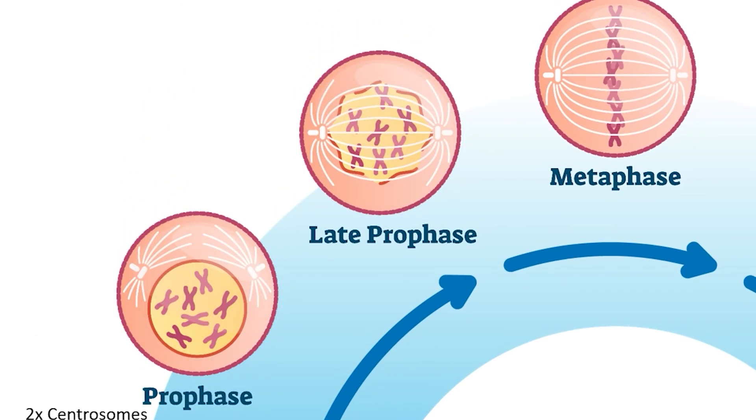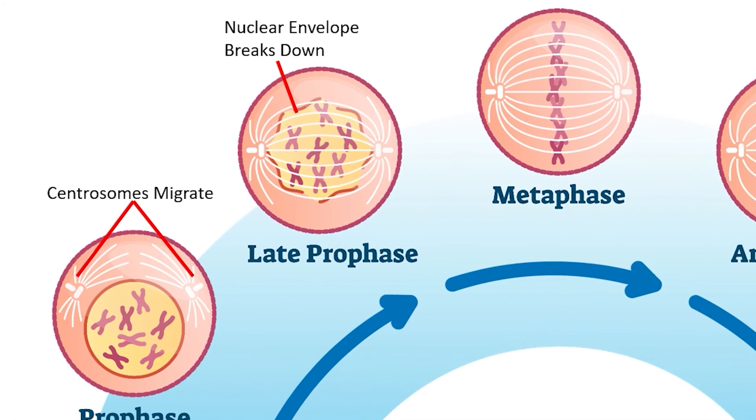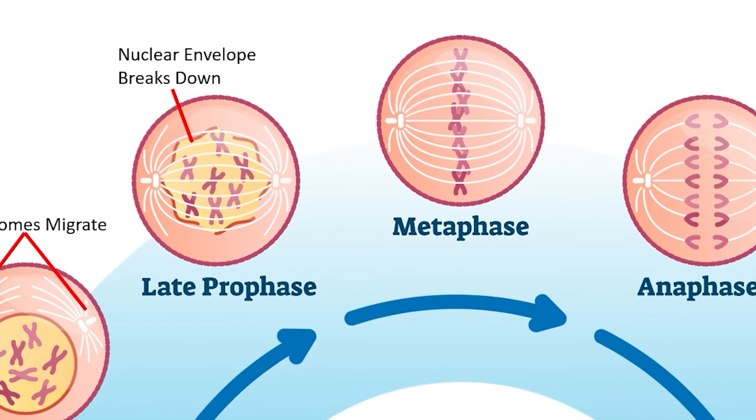During prophase, two important events take place. First, the centrosomes migrate to opposite poles within the cell. Then the nuclear envelope breaks down and spindle fibers begin to seek out the centrosomes of each chromosome to pull them apart. As the spindle fibers push and pull the chromosomes from each pole, the cell enters metaphase.